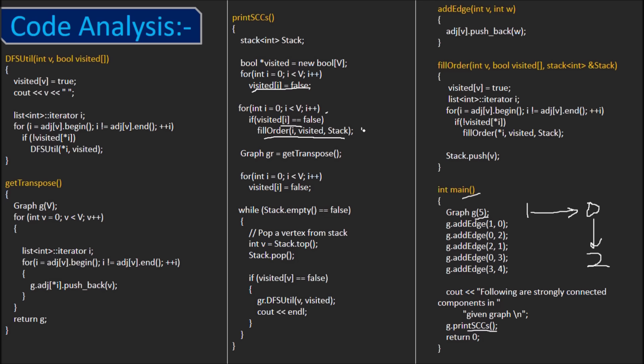This function basically does recursive DFS traversal along with keeping a track of the finish time. Let's look at this function. As soon as DFS is called on the vertex, it's marked as visited. Then we check in the adjacency list of that vertex for all its neighbors and see if the neighbor was unvisited, we call FillOrder function recursively. When all the neighboring vertices of the vertex are visited, it means that it's finished and we push this vertex to the stack.